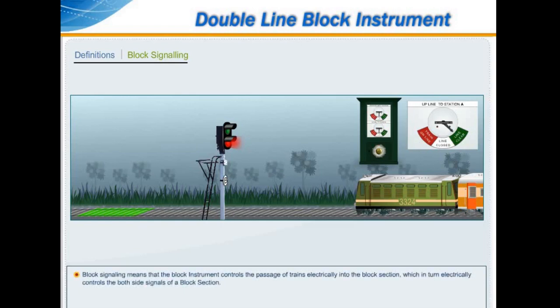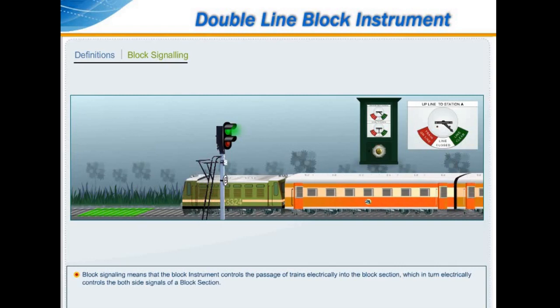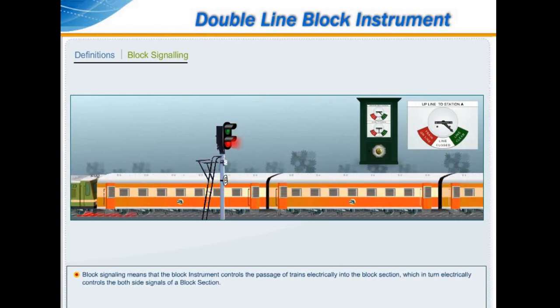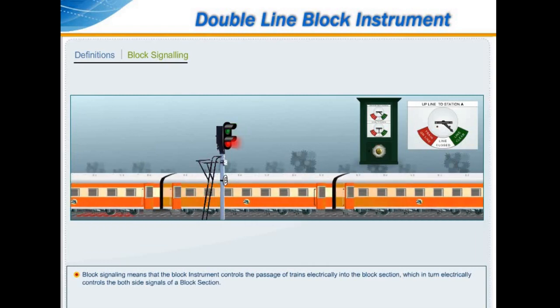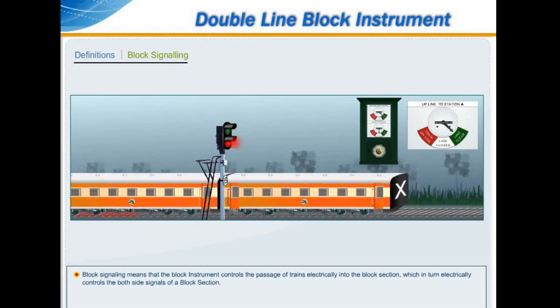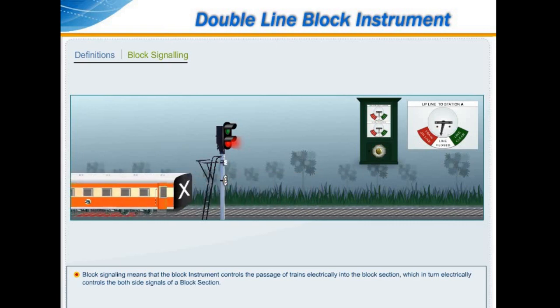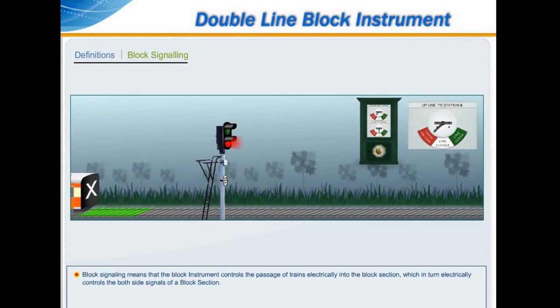Block signalling means that the block instrument controls the passage of trains electrically into the block section, which in turn electrically controls both side signals of a block section.